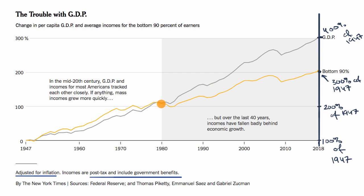It has grown by 100%. And looking at the yellow line showing average income for the bottom 90% — essentially everyone except the top 10% — it looks like it roughly tracked per capita GDP, and in fact may have been a little bit ahead of it over some of those years. So from 1947 to 1980, per capita GDP roughly doubled and average incomes for the bottom 90% also roughly doubled.